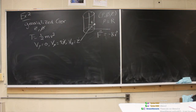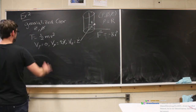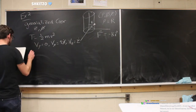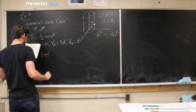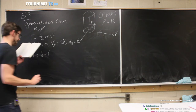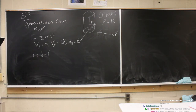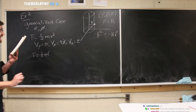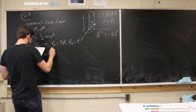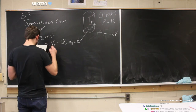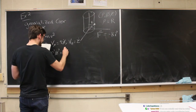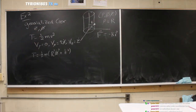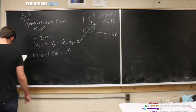We're using cylindrical coordinates. Now we can rewrite the kinetic energy in terms of these components. The kinetic energy is one-half m times v-squared, which becomes one-half m times the quantity R-squared phi-dot squared plus z-dot squared.